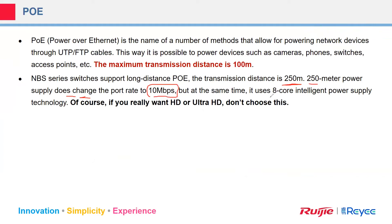Please note that the 250-meter power supply changes the port rate to 10 Megabits per second. It uses eight-core intelligent power supply technology. If you go with 250 meters, forget about high-definition or ultra-high-definition if you are using it for CCTV. It will be just normal CCTV — no HD or UHD if you extend up to 250 meters.